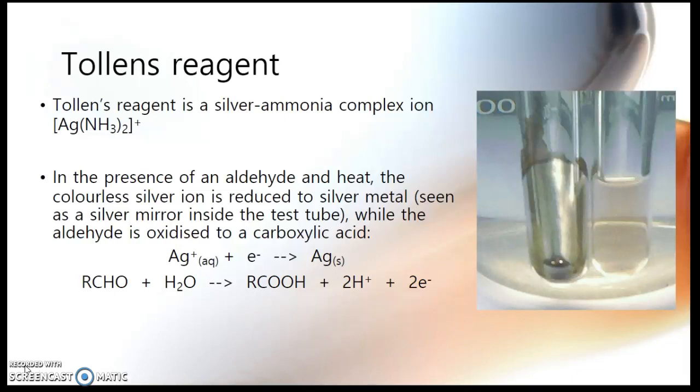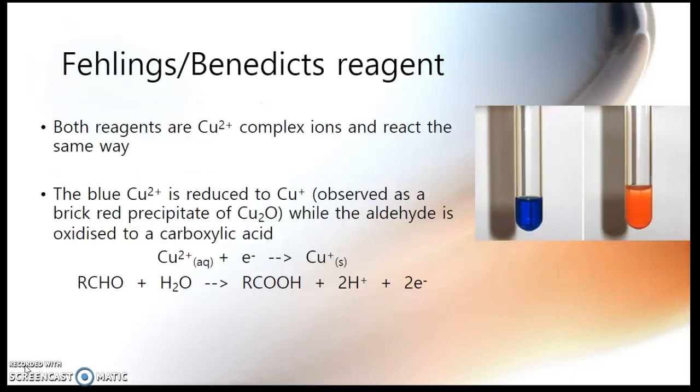The other reagent that can be used is a different reagent but works in a similar way. And well, there are two reagents that basically do the same thing: Fehlings reagent and Benedict's reagent. Both of those reagents are complex ions of copper 2+. So they are a blue colour, which you can see in the left-hand test tube.